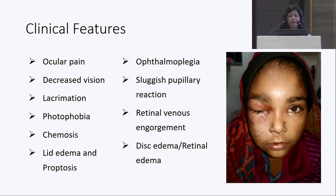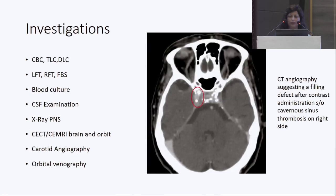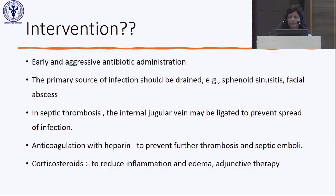Cavernous sinus thrombosis includes phlebitis, thrombophlebitis, and phlebothrombosis. Most cases are of septic origin; aseptic types may follow head trauma, neurosurgical procedures, or local circulatory stasis. Clinically: ocular pain, decreased vision, lacrimation, photophobia, chemosis, lid edema, proptosis, ophthalmoplegia, sluggish pupillary reaction, retinal venous engorgement, disc edema, and retinal edema. Complications include meningitis, sepsis, permanent vision loss, cranial nerve palsies, and septic emboli.